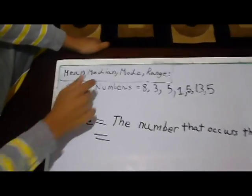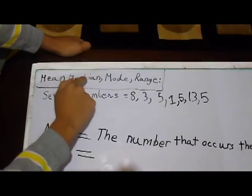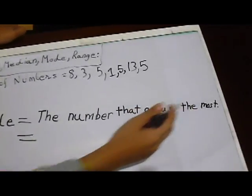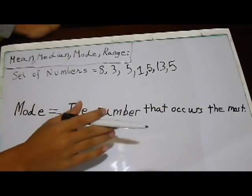Hi, guys. Hi, people. We are on to mode, because in the last episode, we did median. So, the mode is equal to the number that occurs the most. That means the number that appears the most.